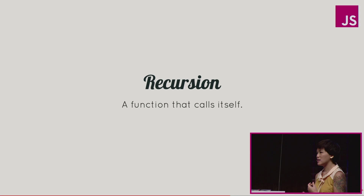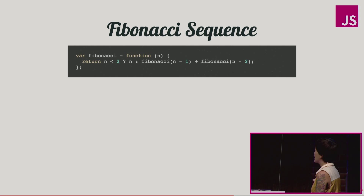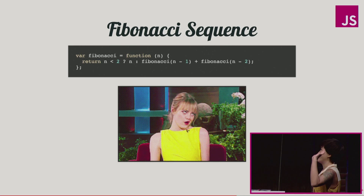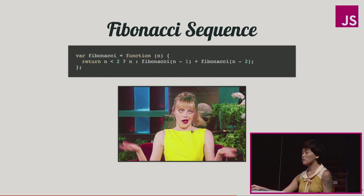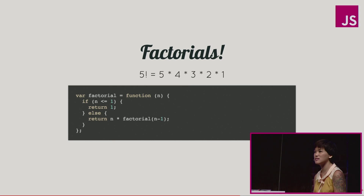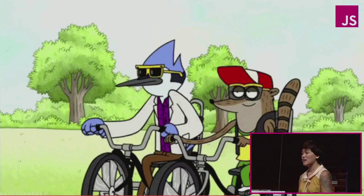Oftentimes people will explain recursion to other people in a simple way, and then they decide to get a little bit more complicated and talk about the Fibonacci sequence. I took math like over a decade ago, and when somebody starts to explain recursion to me by talking about the Fibonacci sequence, I'm like, whatever. One time though, a friend explained recursion to me by talking about factorials. I think everybody really likes factorials because they have this cute little exclamation point. And if you remember them from elementary or middle school mathematics, I'm like, oh, that makes a lot more sense. I really like that definition of recursion.